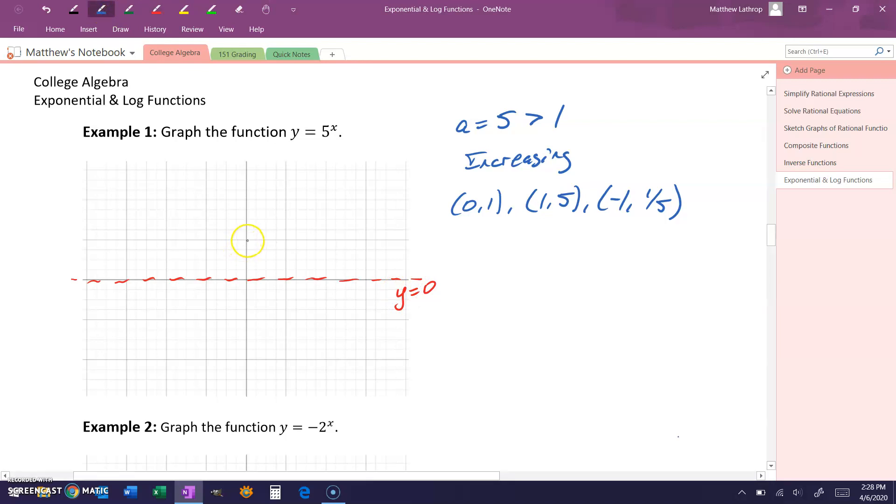So we could go ahead and start off by plotting our point (0,1). We could plot our point (1,5), which would be somewhere above that. I'm not being too accurate here with my values since we're just sketching. And we'd have the point (-1, 1/5), which would be close to this horizontal asymptote. And then we just connect those points in that pattern that we've seen exhibited by the graph of the exponential function.